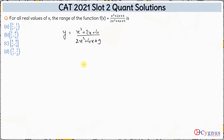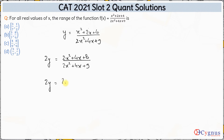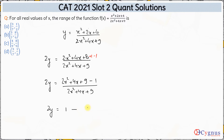Instead, let's multiply the whole equation by 2. So 2y = (2x² + 4x + 8) / (2x² + 4x + 9). Now, we can add 1 and subtract 1 in the numerator, giving us (2x² + 4x + 9 − 1) / (2x² + 4x + 9), which simplifies to 1 − 1/(2x² + 4x + 9). So the whole expression is simplified into one single quadratic.